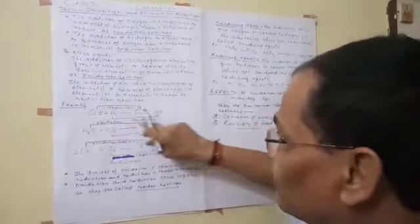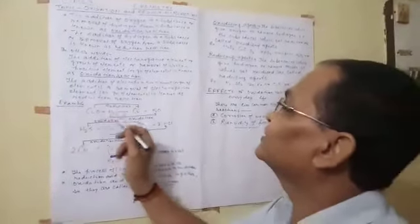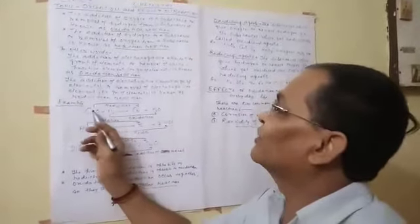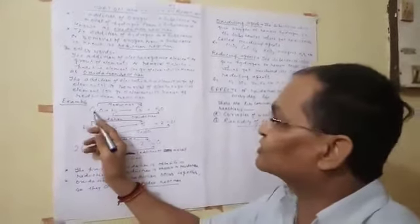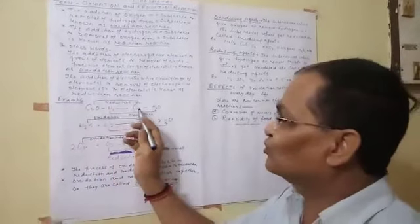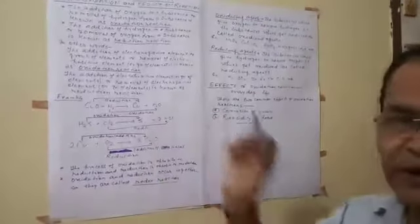These two reactions, oxidation and reduction, take place together, as is clear from the given example. Here we see that when copper oxide reacts with hydrogen, we get copper metal and water.